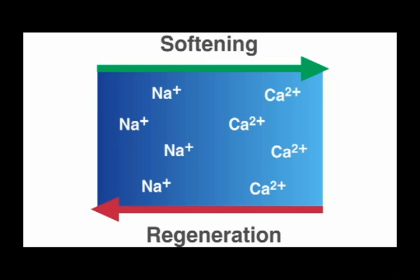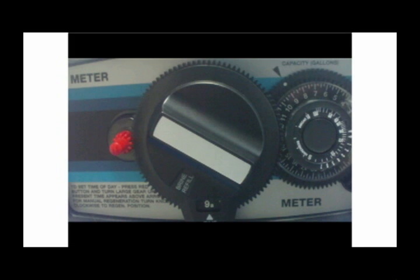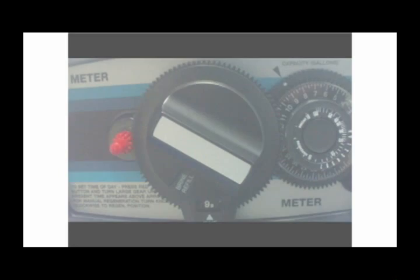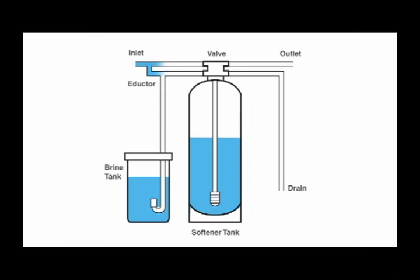After the brine solution in the tank has been removed, the softener has been regenerated. The fourth and final step in the water softener regeneration process is the brine fill cycle. In this cycle, the brine tank is filled up so it is ready for the next regeneration cycle.